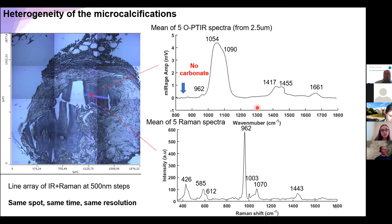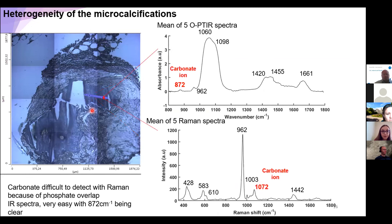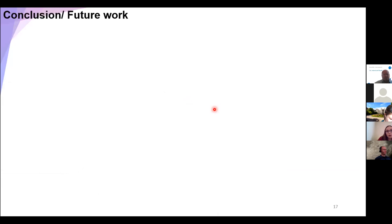Another thing I would like to show is the heterogeneity of the microcalcifications — this was the most challenging part during my PhD. I scanned a line in the middle of the calcification and extracted IR, OPTIR, and Raman spectra from the same spot. In one area you can see we have no carbonates, confirmed by the Raman spectra. And in another part of the calcification, you can see a carbonate peak which is also correlated with the Raman spectra. Finally we can see on this line, just on this spot, a carbonate substitution that is confirmed by both Raman and IR — so we are confident it is a real carbonate substitution.